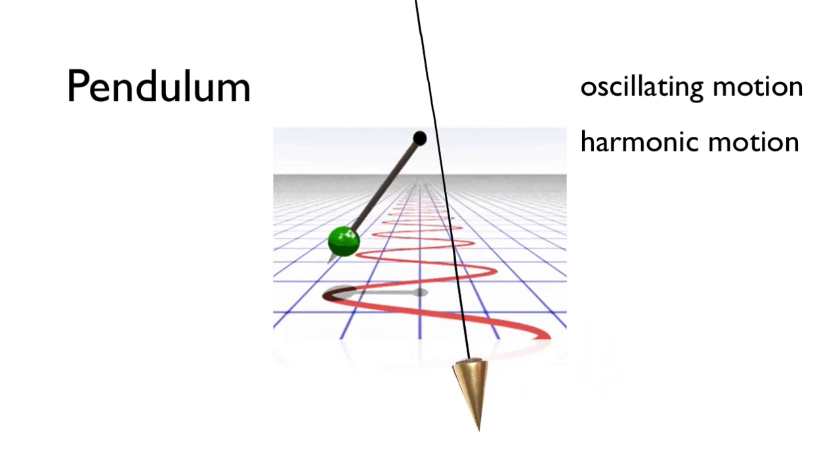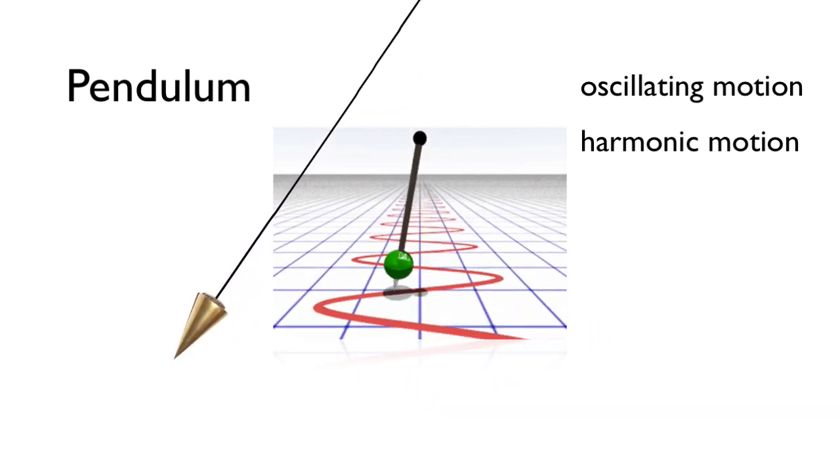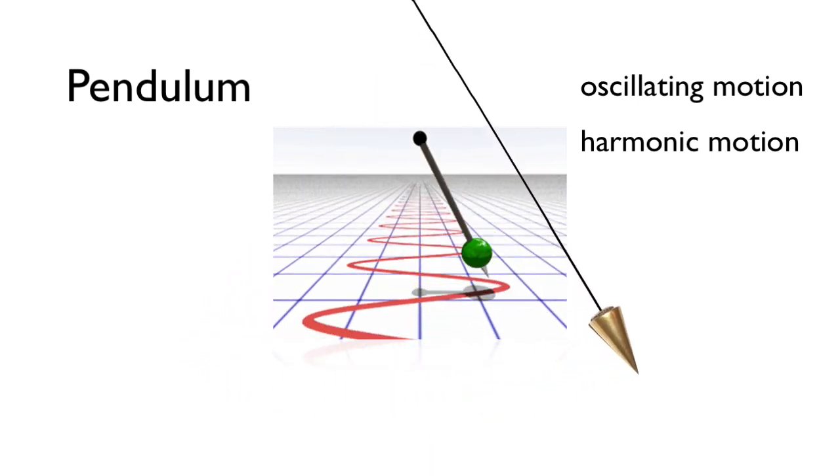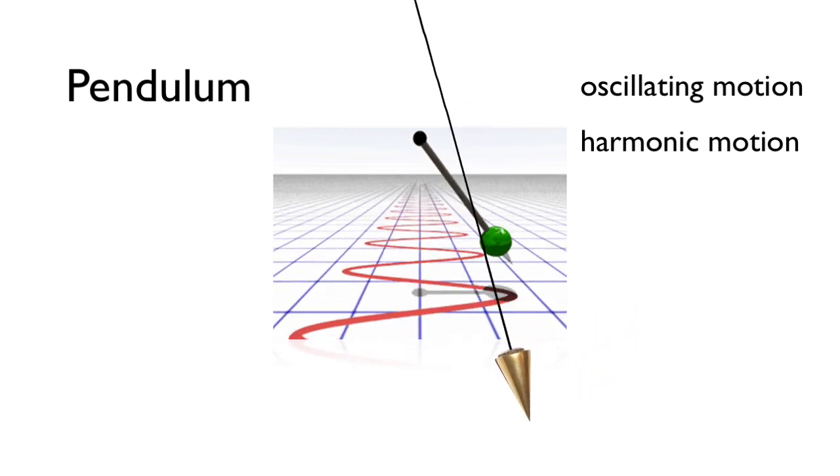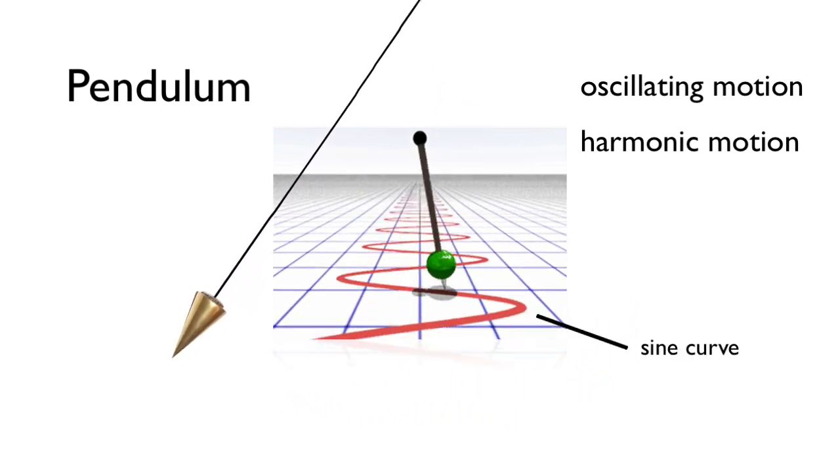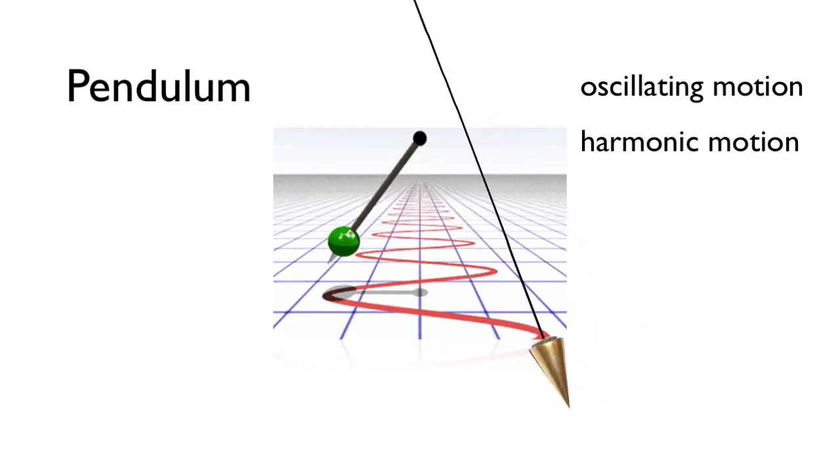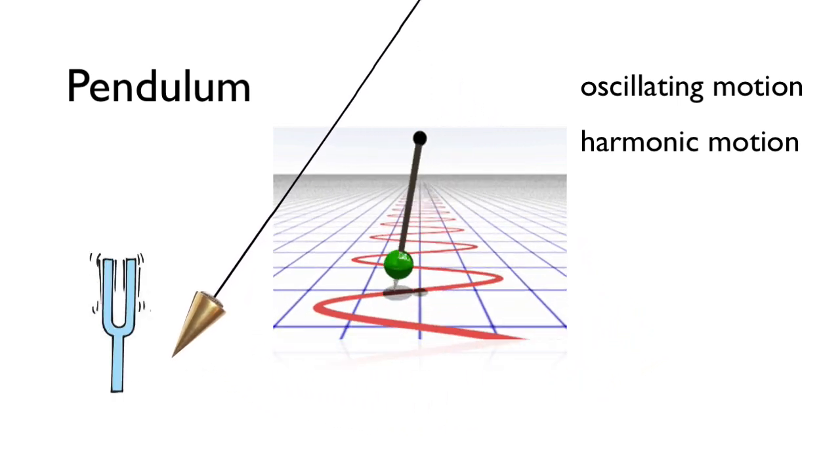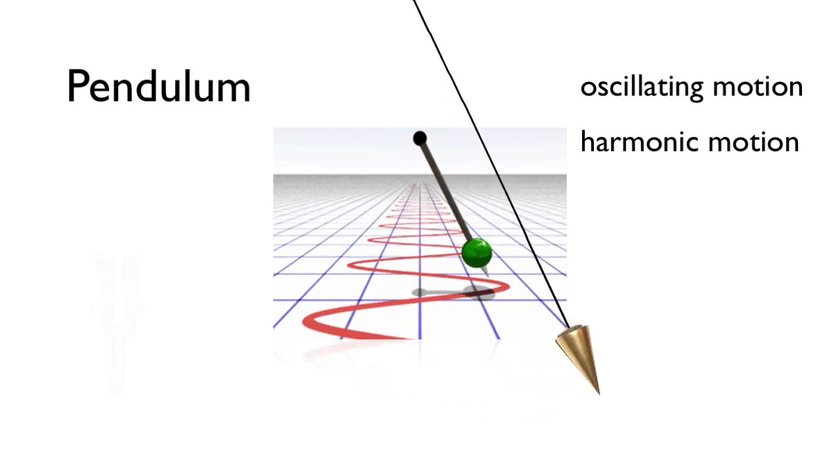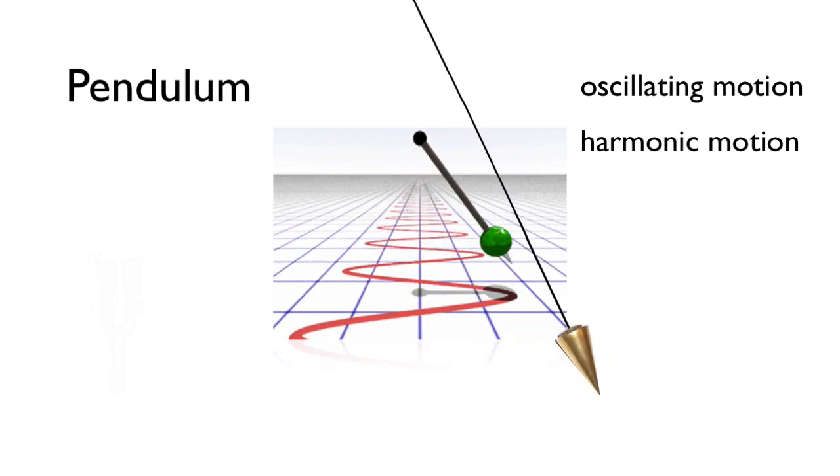Look at the waves produced when this harmonic motion is traced onto a moving surface. Mathematicians call it a sine curve. As we'll see, a vibrating object, such as an electron or a tuning fork, emits energy in the form of these sine-curve waves.